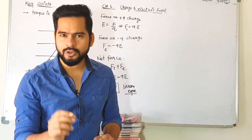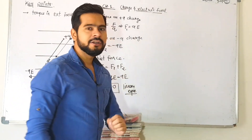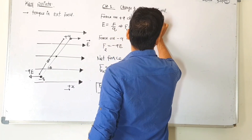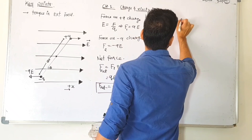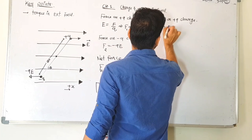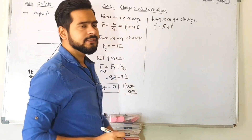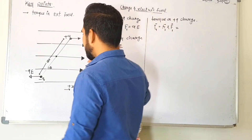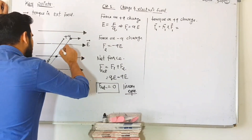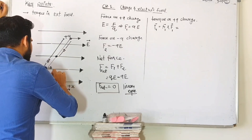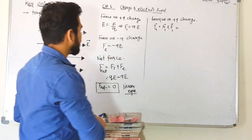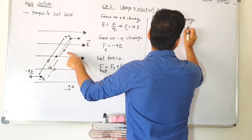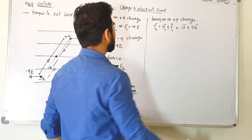So our next step is to find the torque — we'll find both individual torques, add them, and look at the final equation. Let's find the torque in the external electric field. Torque on the plus q charge: the basic formula from class 11 is torque equals r cross F. So torque one equals r1 cross F1. The origin about which it rotates gives r1 equal to a. The force is q into E. So torque one equals a cross qE.